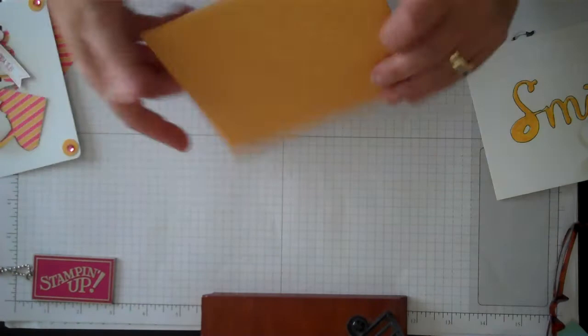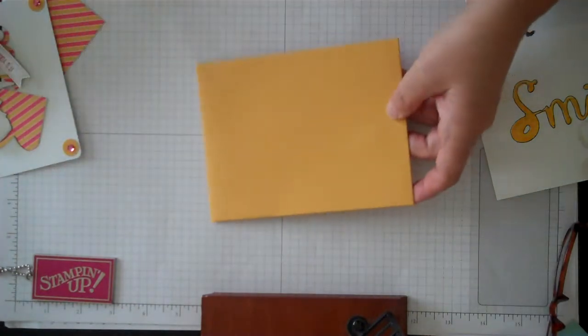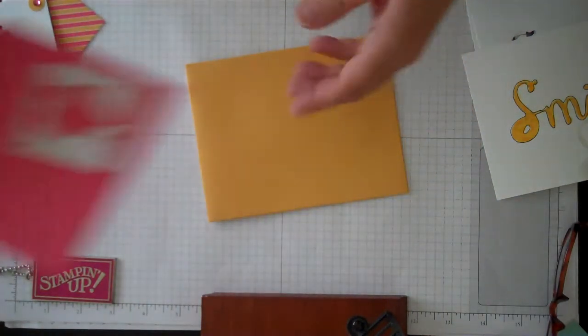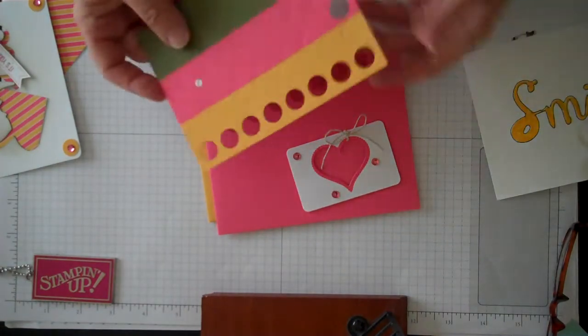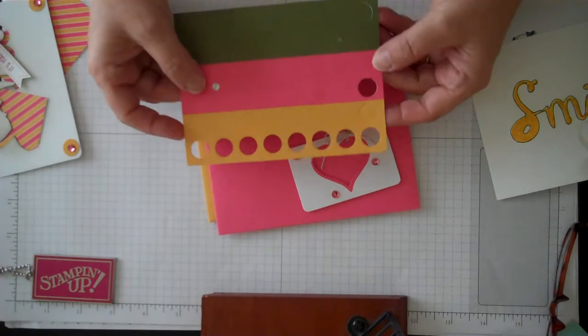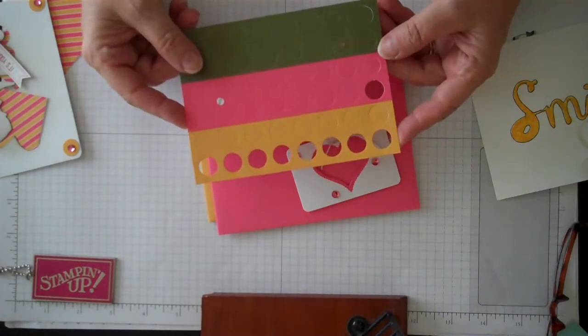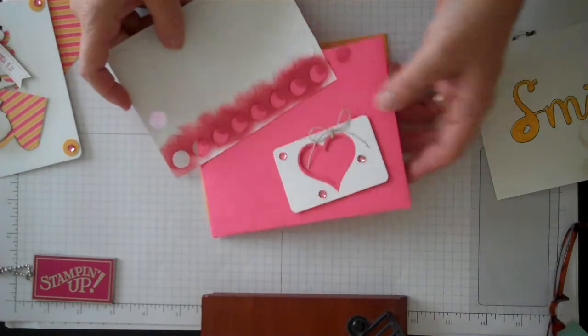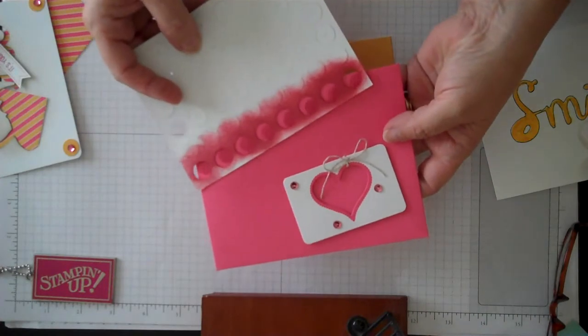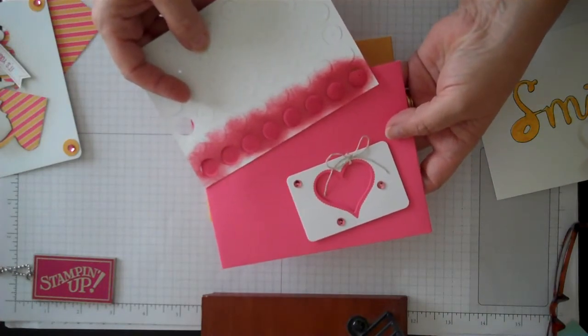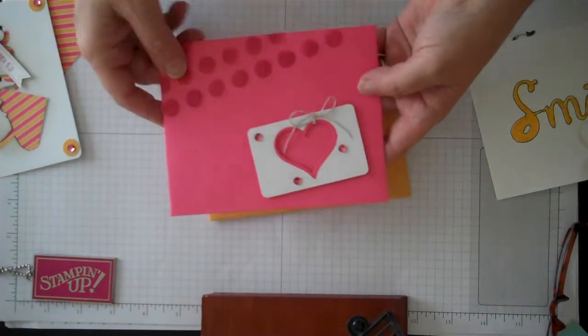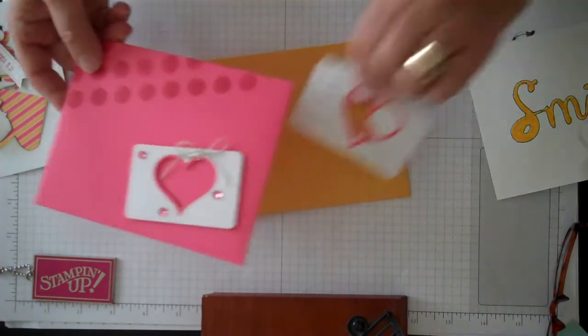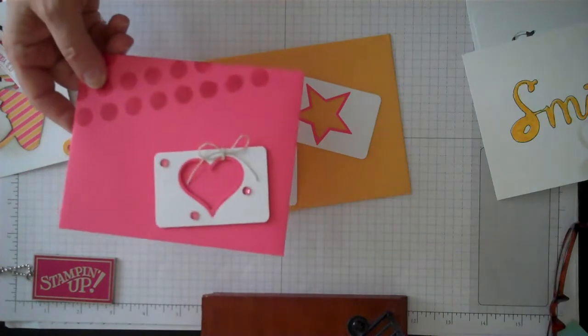Another thing that I did is I took one of the envelopes here and colored it in. How I did that is I took a bunch of the dots off of the smaller dots for the package, flipped it over, and used my sponge dauber to color it in with some strawberry slush and made these cute little dots across here.